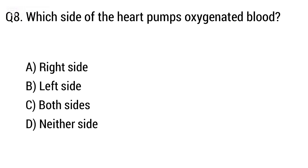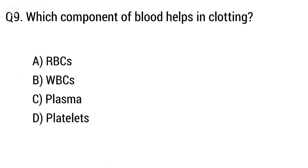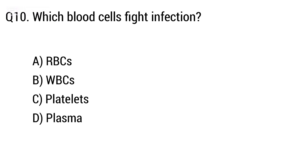Question 8: Which side of the heart pumps oxygenated blood? Option A: right side, B: left side, C: both sides, D: neither side. The right answer is option B, left side. Question 9: Which component of blood helps in clotting? Option A: RBC, B: WBC, C: plasma, D: platelets. The right answer is option D, platelets. Question 10: Which blood cells fight infections? Option A: RBC, B: WBC, C: platelets, D: plasma. The right answer is option B, WBC.